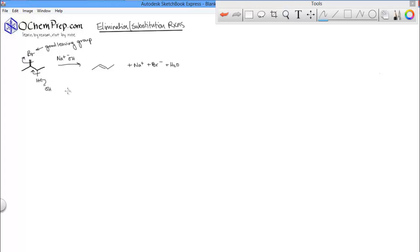Three arrows all at once. This mechanism, drawn like this, is a concerted mechanism. It happens all at one time.